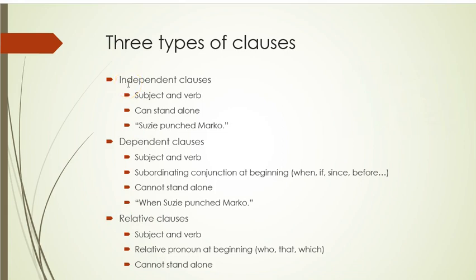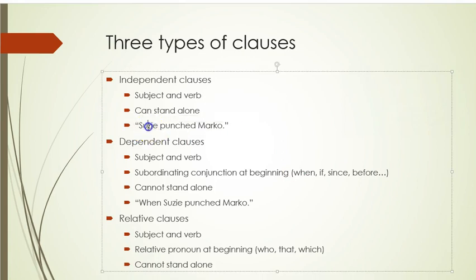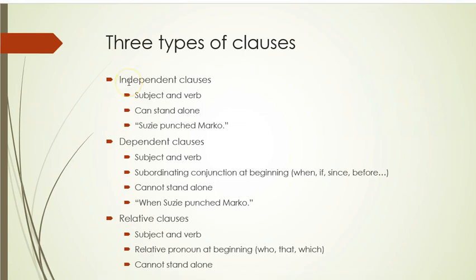Independent clauses — here's what they are. They're a subject and verb. They can be as short as two words long, and the big thing is they can stand alone. 'Susie punched Marco' — Susie is the subject, punched is the verb, Marco is the object. That's all you need for an independent clause. The independent clause could be a sentence, but it's not necessarily one. An independent clause is what's used in sentences — you must have one.